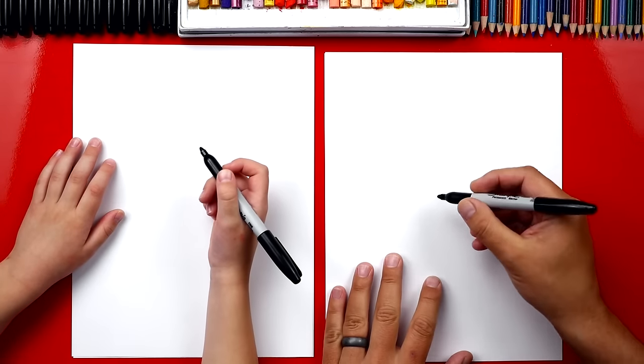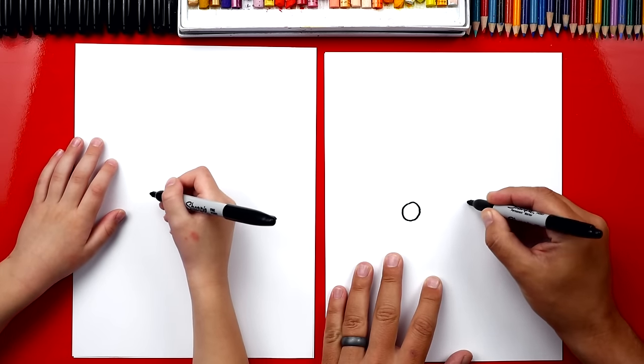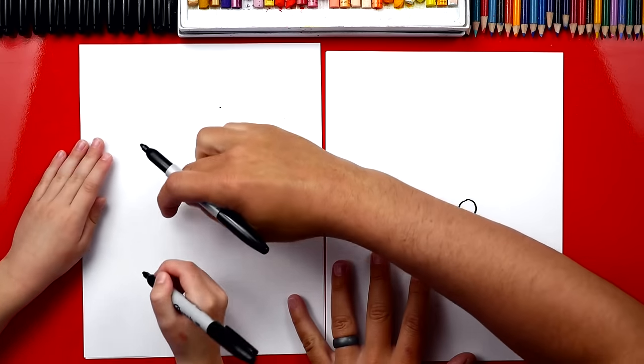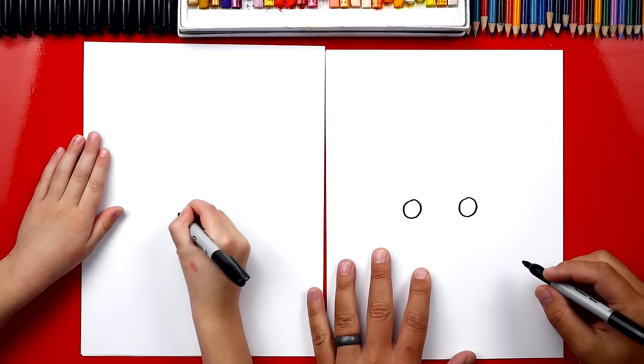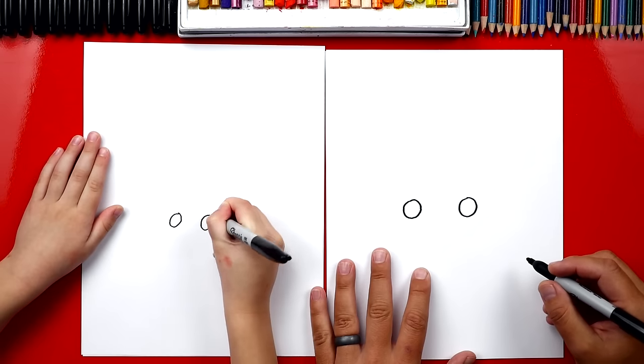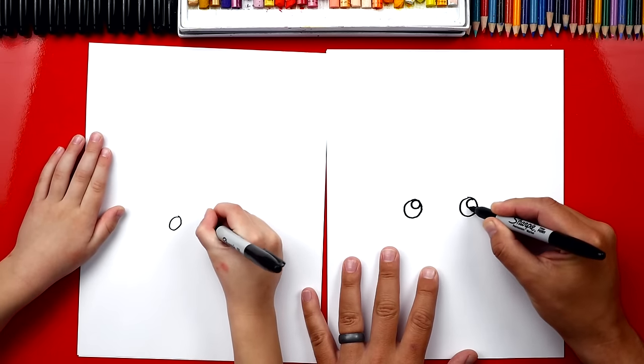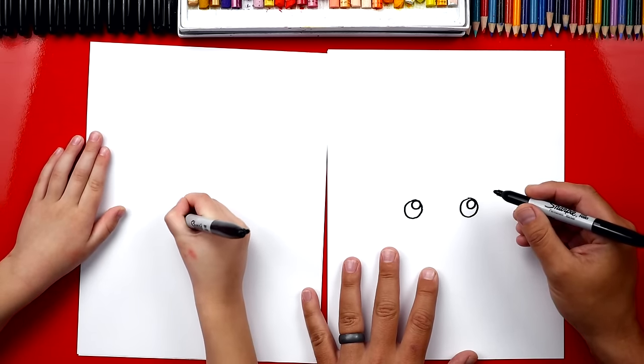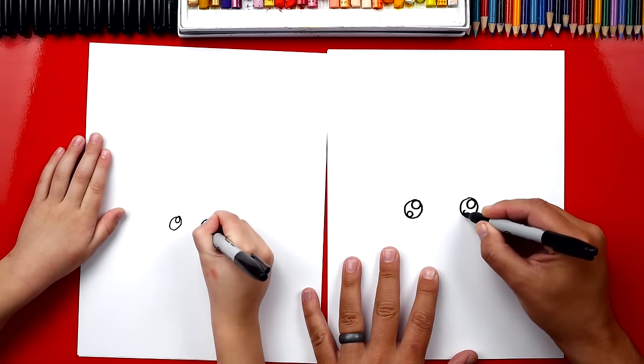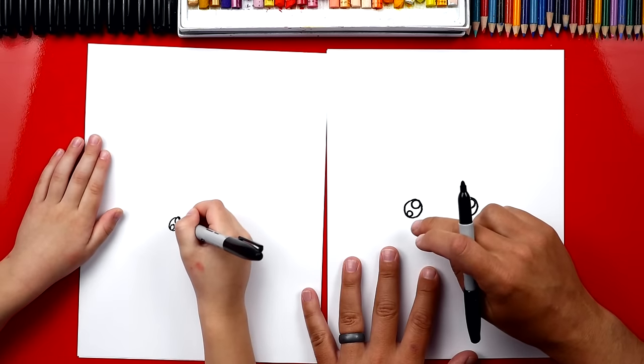We're going to start by drawing our ladybug's eyes. We're going to draw two circles right in the middle of the paper, but we want to leave some space. We don't want to draw them right next to each other, so we have room for the mouth. Draw one here and one over here. Perfect. Now we're going to draw smaller circles in the top right so that our ladybug's eyes look shiny and friendly. And then we can draw a smaller one down here in the bottom left. Then we're going to color in the big circle but leave these two smaller ones white.